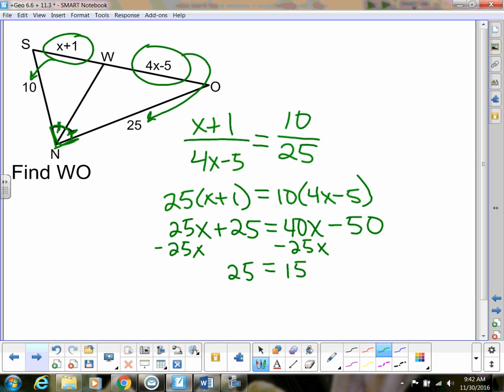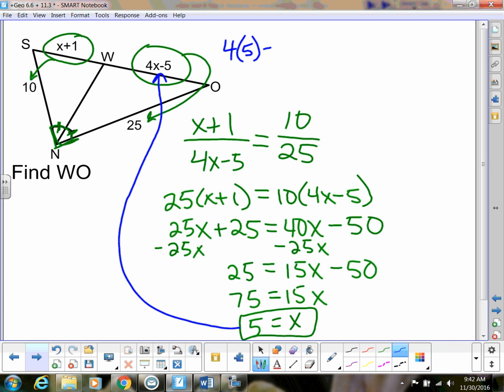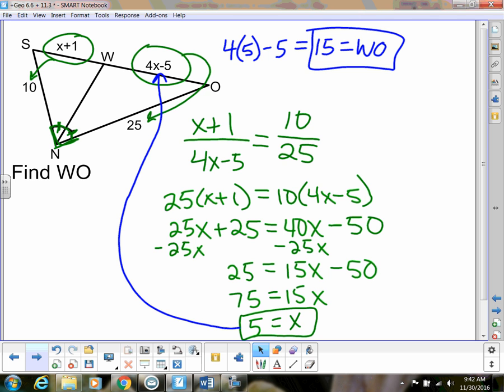And then solve for your x. So we've got 15x. I'm going to add that 50 to the other side to get 75. And then I'm going to divide the 75 by the 15. And I get x equals 5. So always when you get x, what are we trying to find? We're not trying to find x. We're trying to find WO. So make sure to plug this back in to the x for WO. So I'm going to do 4 times 5 minus 5. So it's going to be 20 minus 5, which is 15. So WO is 15 units. All right. So those are our proportionality theorems.